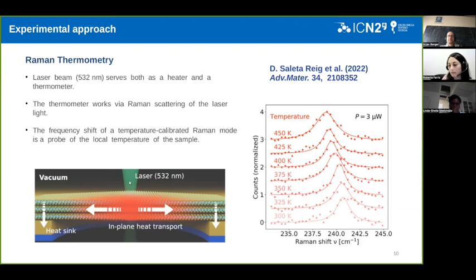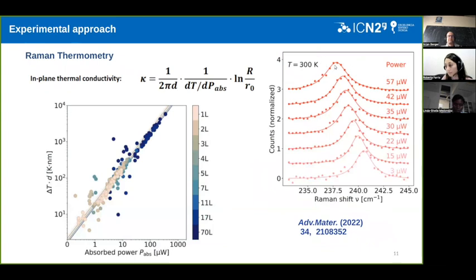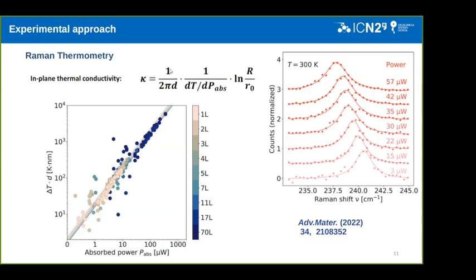How the Raman thermometry works? Basically, they measure the Raman shift. They use a pulse of a given frequency, in this case, 532 nanometers, which is the Raman active mode, A1G mode. And they measure the red shift with temperature for this mode. So they can use this at very low power to calibrate the system. Once they have this trend, they can perform the same measurement. In this case, keeping the temperature constant and changing the absorbing power, so the power of the laser. And so they can have also in this case a Raman shift.